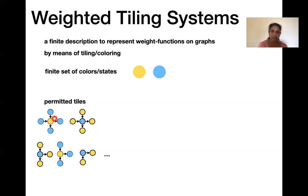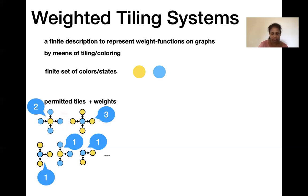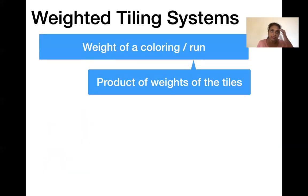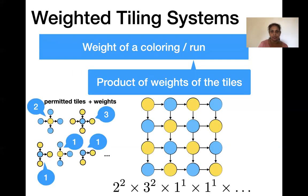For example, a tile for a vertex with four neighbors — one down, one right, one inverse-down, one inverse-right — gives colors to the central vertex and all those neighbors. We give a set of permitted tiles and also assign weights to them; for example, one tile has weight two, another has weight three. Non-permitted tiles effectively get weight zero. The weight of a coloring is the product of the weights of all tiles appearing in it.